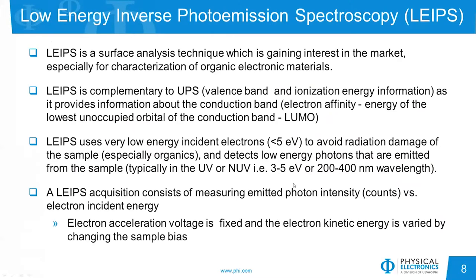The next technique is LIPS, or Low Energy Inverse Photoemission Spectroscopy. This is one of the newest techniques that PHI now offers, and it's seeing a lot of interest in the market, especially for organic electronic materials. It's complementary to UPS — in UPS we look at valence band information and ionization energy, while in LIPS we provide information on the conduction band, giving us the electron affinity or the LUMO energy level. LIPS uses very low energy electrons to bombard the sample to minimize damage to organic materials, and we look at the very low energy photons emitted, typically in the UV or near-UV range.